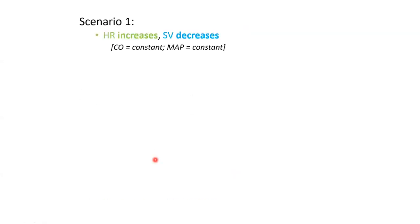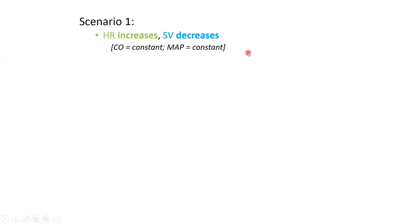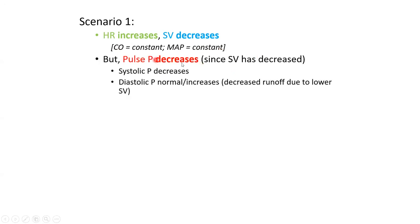Scenario one: heart rate increases, stroke volume decreases. You have a heart beating fast but each beat ejects a lesser volume. This typically happens when only heart rate increases without increased contractility per beat. The math is quick: heart rate multiplied by stroke volume is cardiac output, and since one is increasing while the other is decreasing, cardiac output remains constant. With TPR constant, mean arterial pressure is also constant.